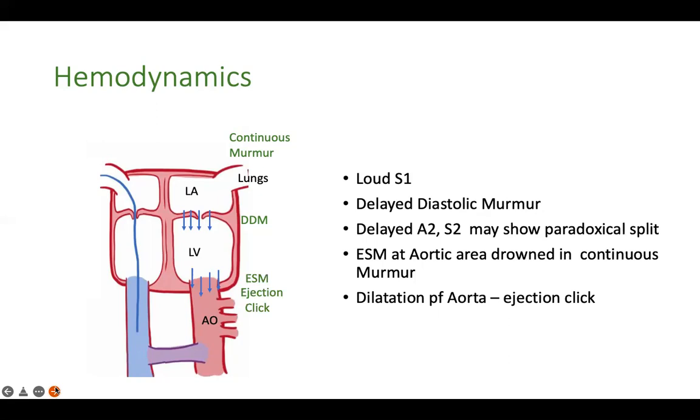Because there is increased blood flow through the aorta, A2 is often delayed, sometimes leading to a paradoxical split.